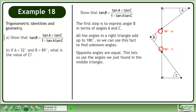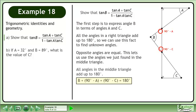Opposite angles are equal. This lets us use the angles we just found in the middle triangle. All angles in the middle triangle add up to 180 degrees. This gives us B plus 90 degrees minus A plus 90 degrees minus C equals 180 degrees.